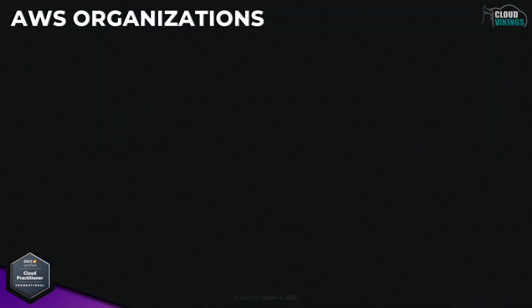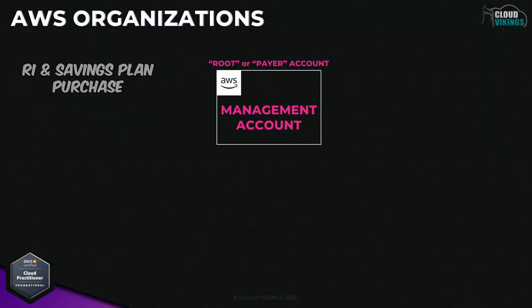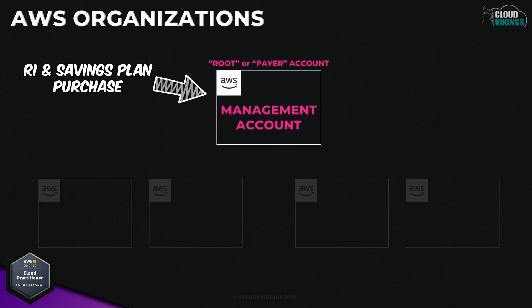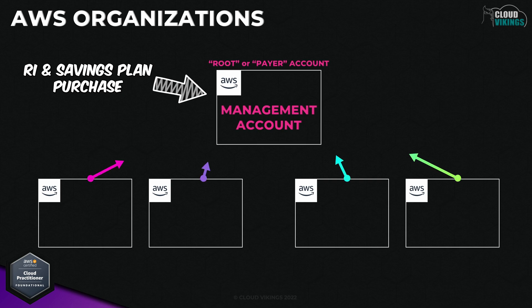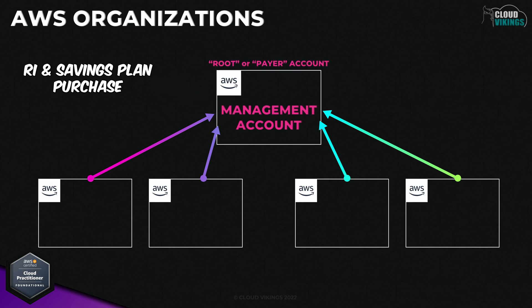Another billing-related benefit of the AWS Organizations linked account structure is with reserved instances and savings plans. When you buy these long-term commitments for your compute or other services to get discounted pricing, these commitments and discounts are applied at the account level. Without AWS Organizations, you'd need to manage your savings plans and RI commitments for each account separately. With AWS Organizations, you can purchase your RIs and savings plans at the root account level, and the discounts are applied at the aggregated usage level based on your commitment details.